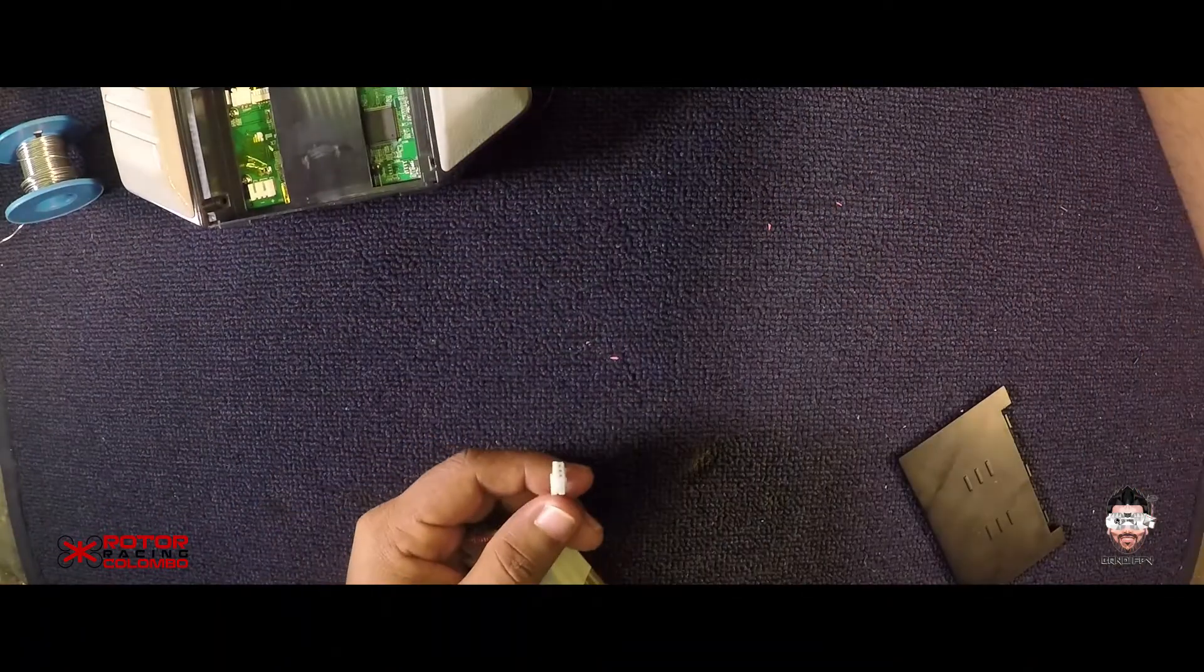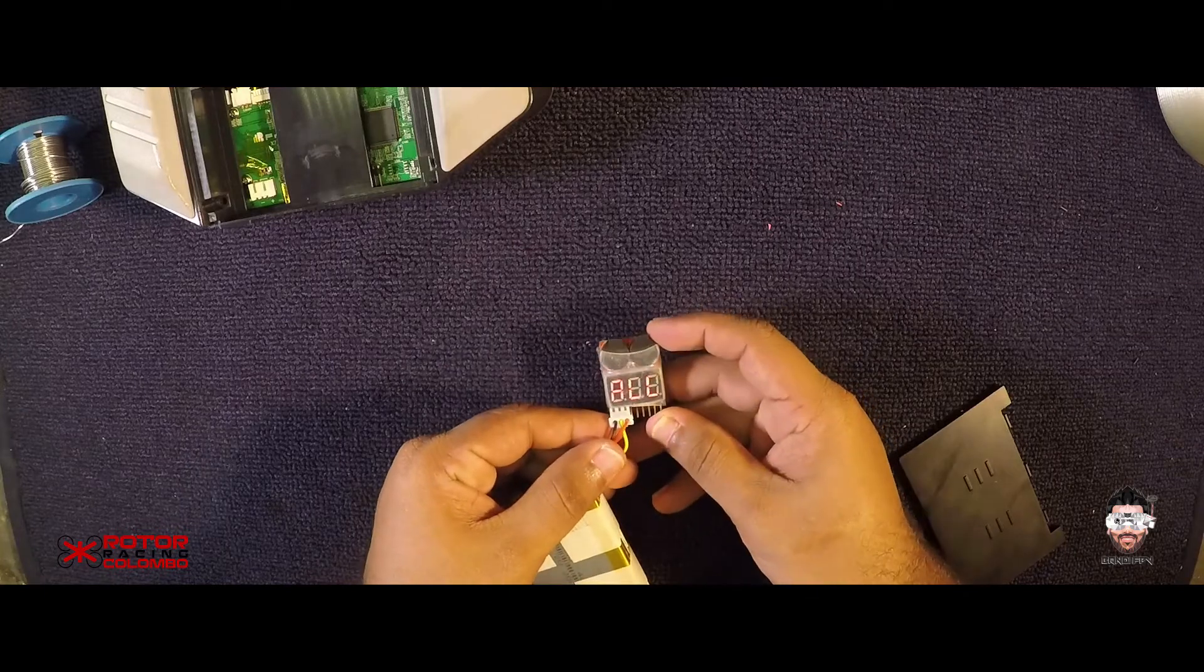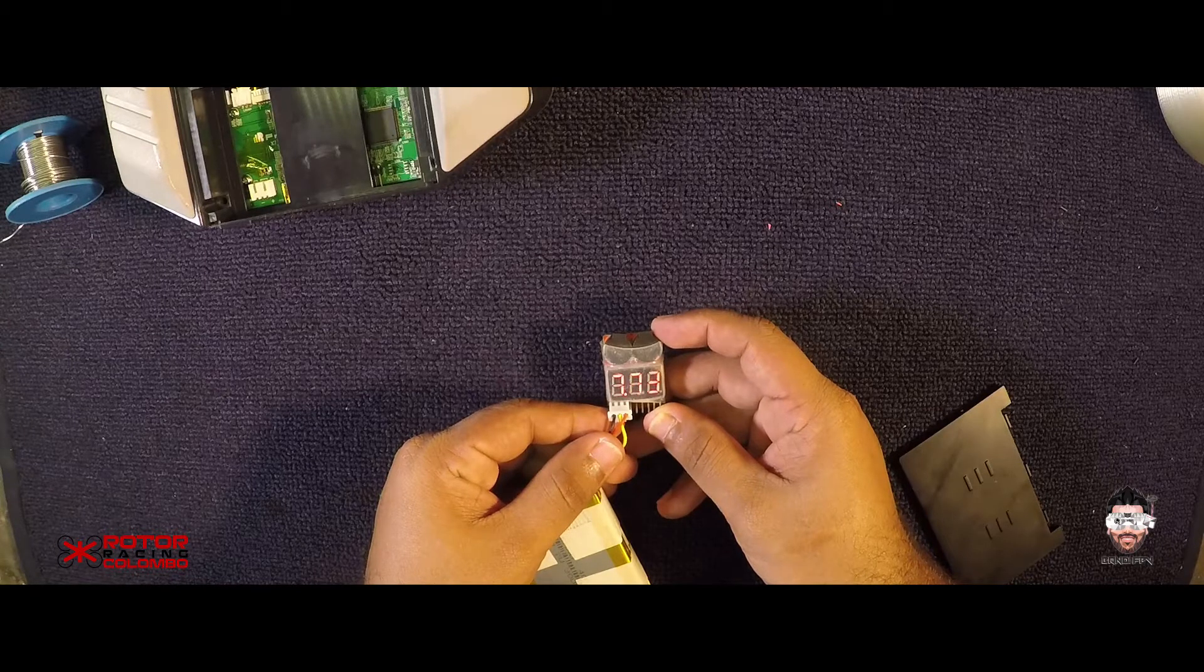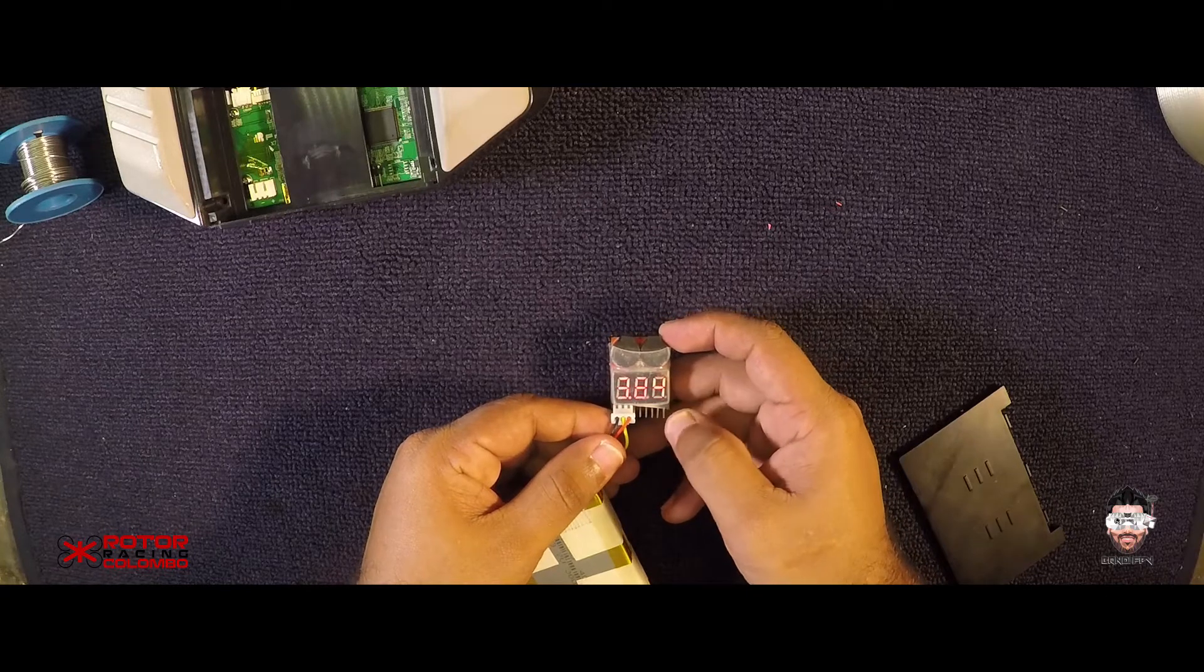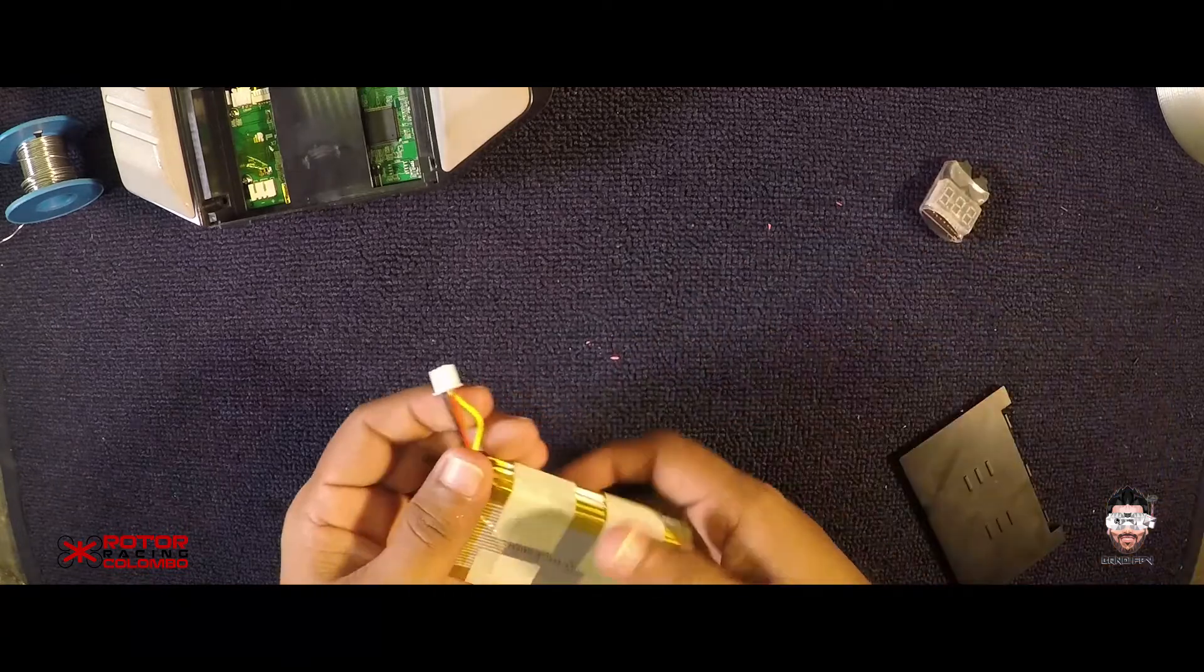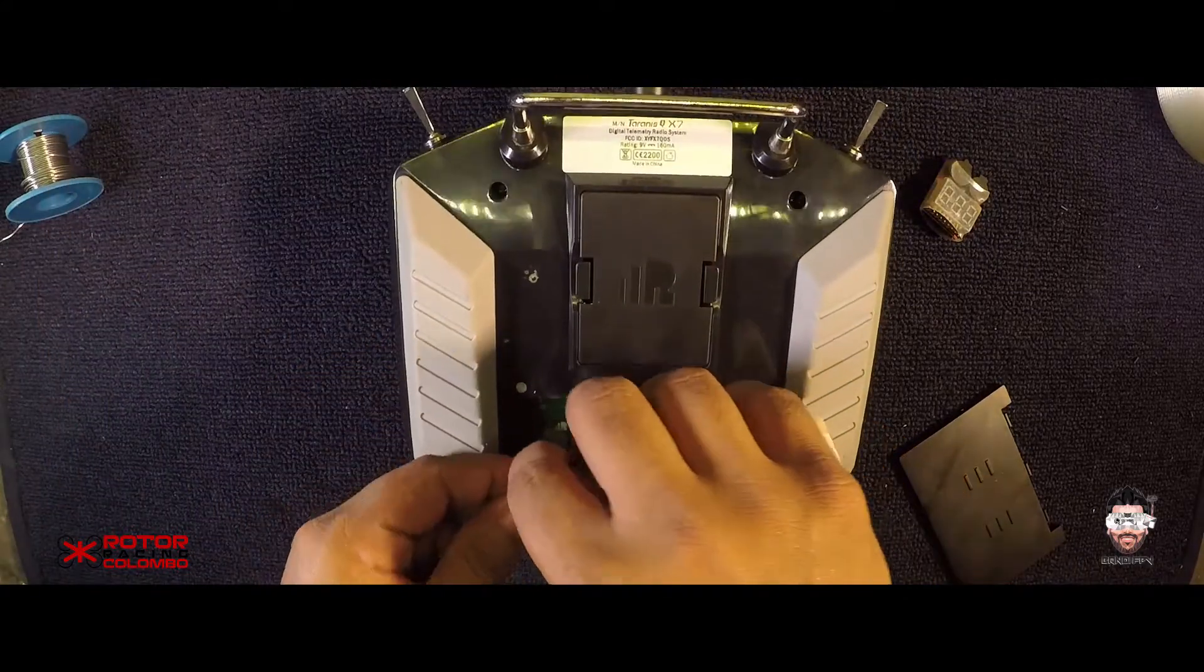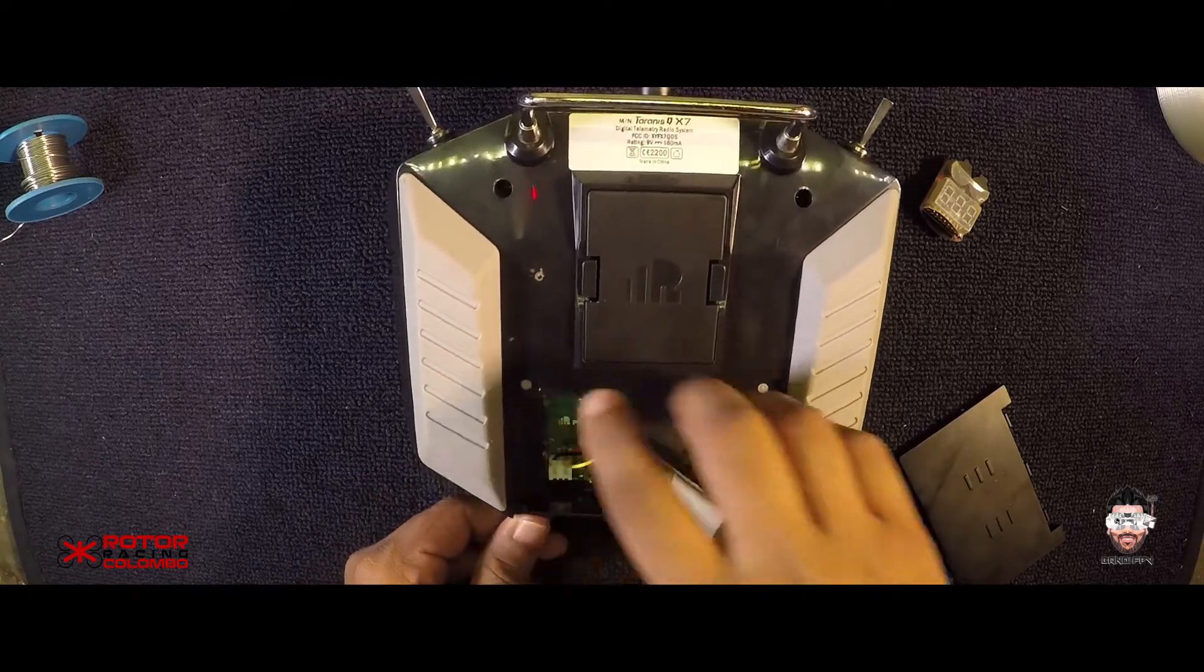Before you connect to the TX you should check the battery voltage. Yeah, it's pretty cool. Each two cells has 3.8 volts and total power is 7.73. Yeah, it's almost charged. Yeah, this is the battery and I'm connecting the battery lead.